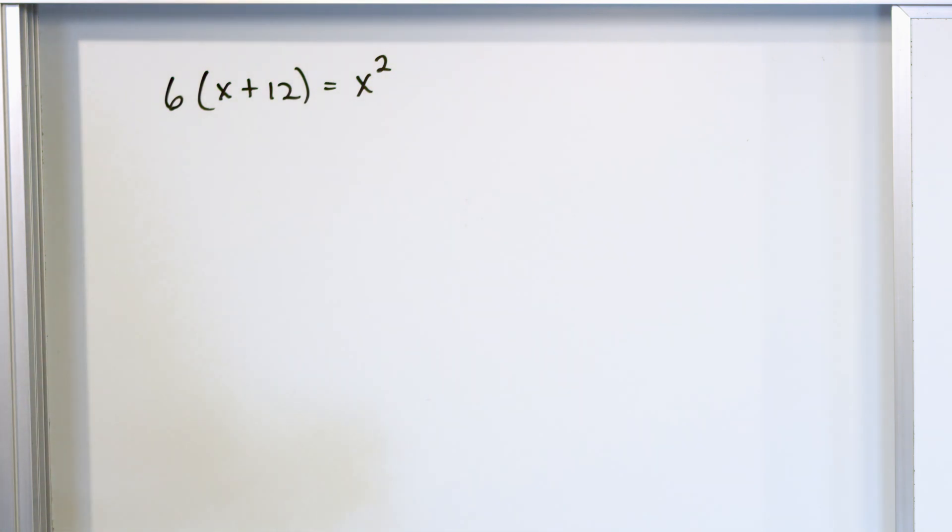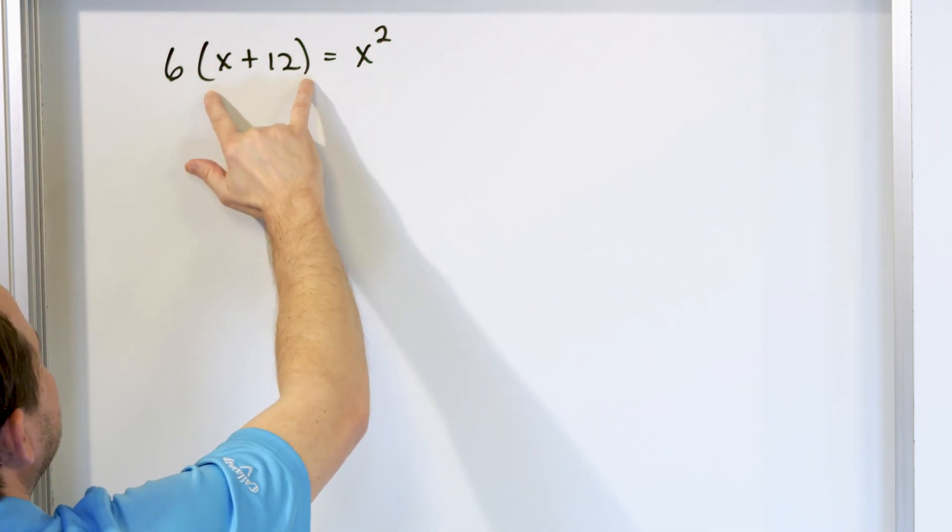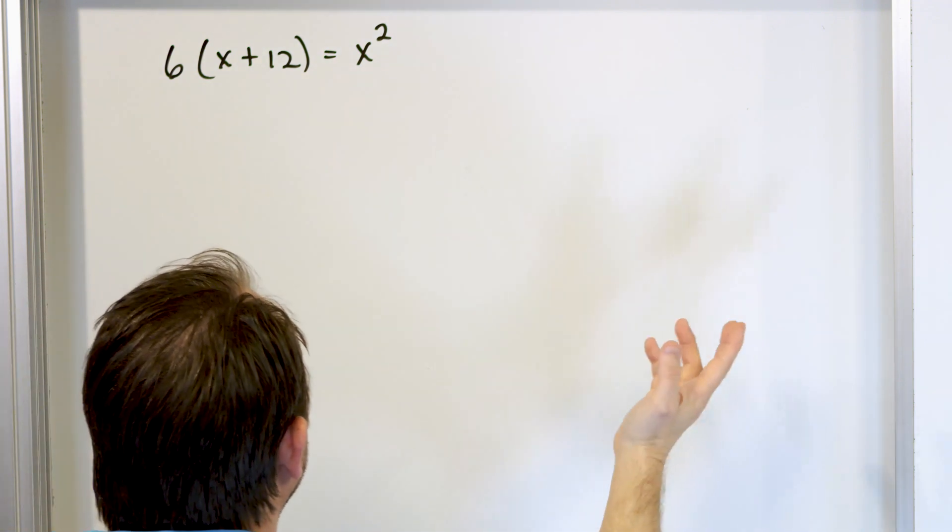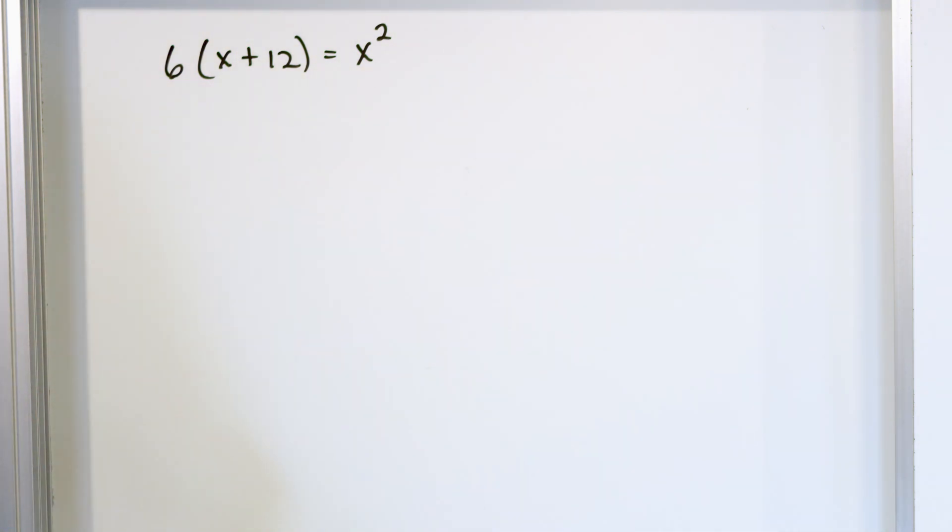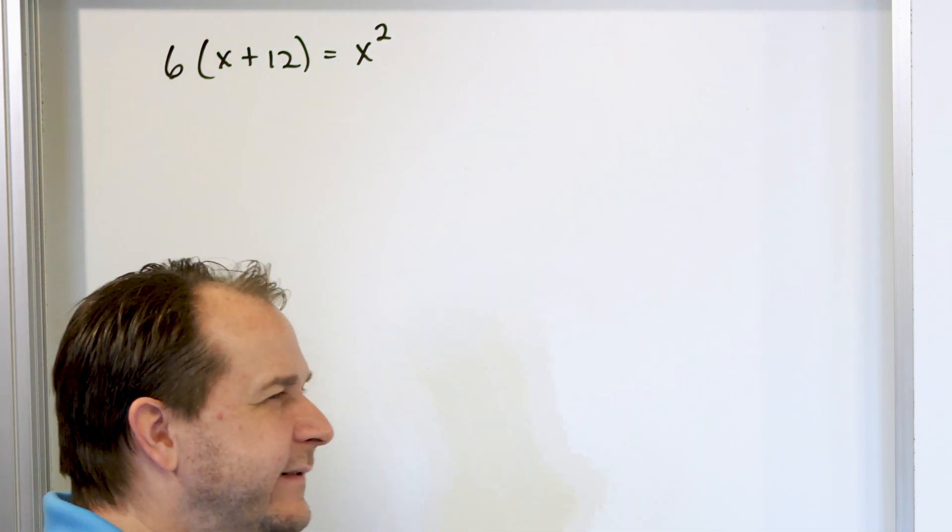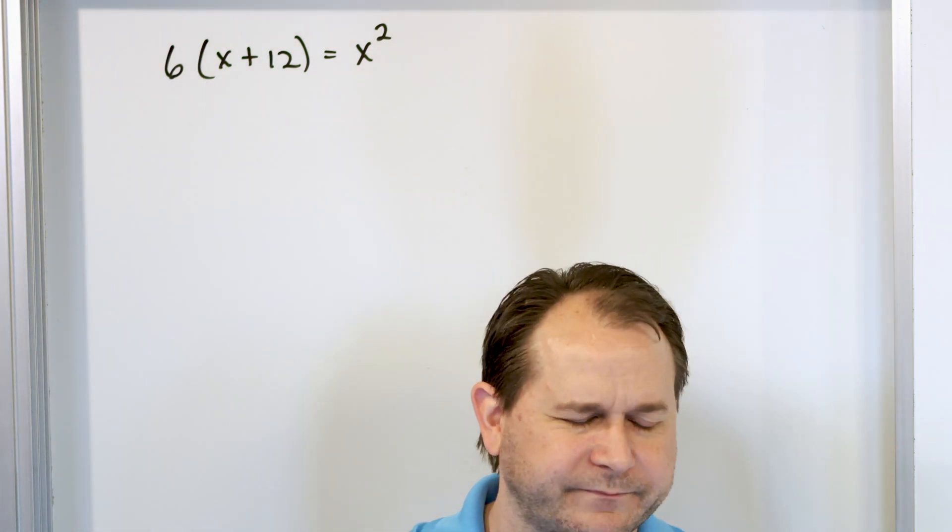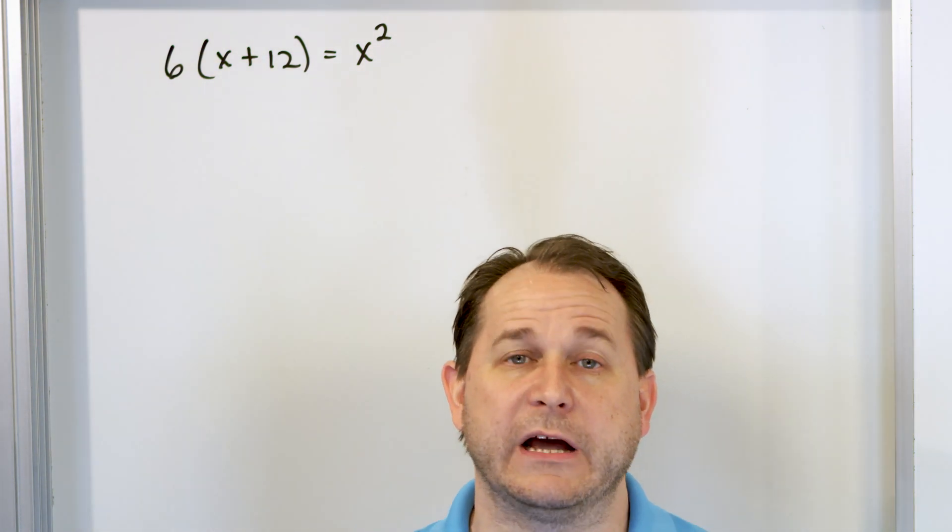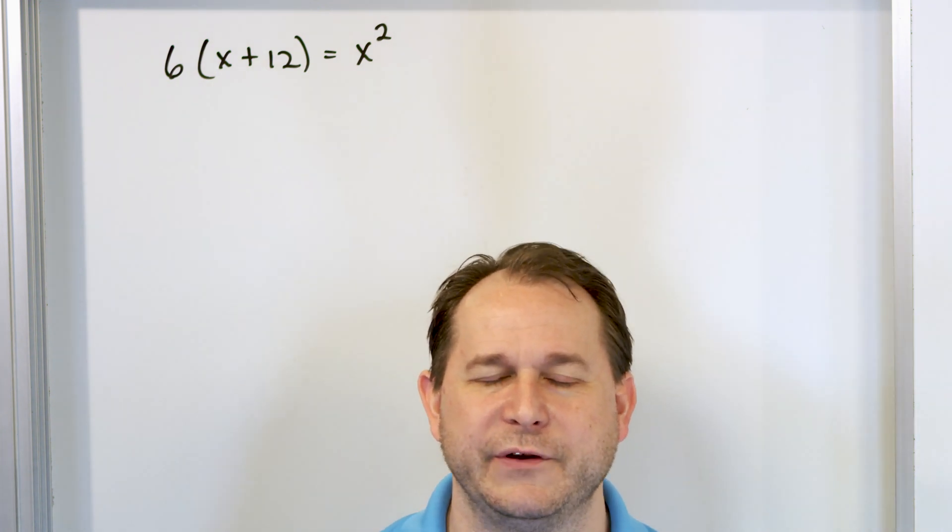So a lot of times students will start saying, okay, I'm going to have to set this equal to zero or something, but there's no zero over there. Then they'll try to move the x squared over there, and it'll just look completely different than anything they've really done before. That's just because the problem is constructed to try to confuse you.